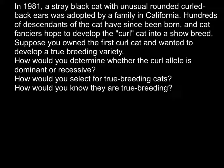The first hypothesis would be that the trait is recessive. In order for a recessive trait to show up, this particular unusual cat would have to have two recessive alleles — otherwise it just wouldn't show up as a phenotype. So we have to suggest that this cat has two recessive alleles: small a, small a.